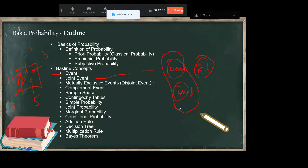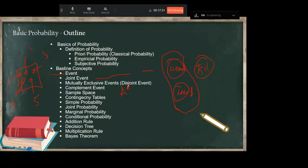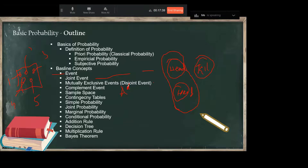We will talk about these things in detail — what is mutually exclusive, what is a complementary event. The complement of an event A is 'A bar' — something you have and something you don't have. What you don't have is going to be your complement. A complement is the rest of the sample space. Then what is sample space?